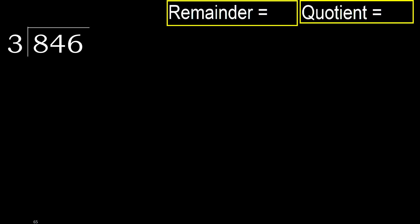846 divided by 3. 8 is not less, therefore start with 8. 3 multiplied by which number is nearest to 8 but not greater? 3 multiplied by 3 is 9 — 9 is greater. Multiplied by 2, 6 is not greater.